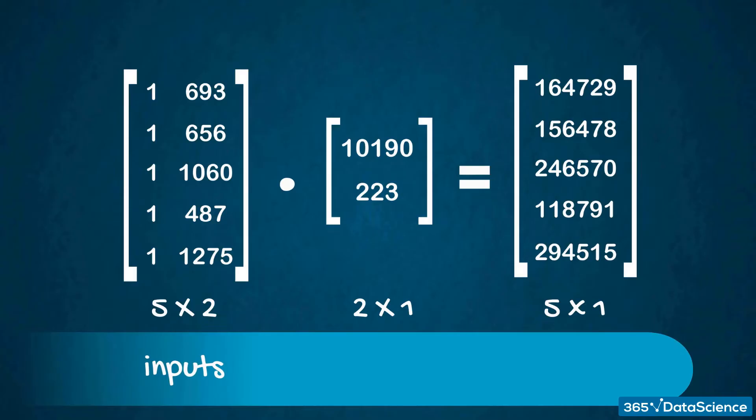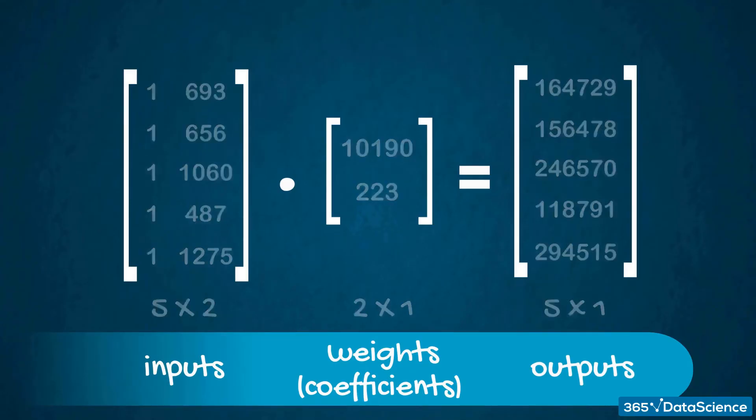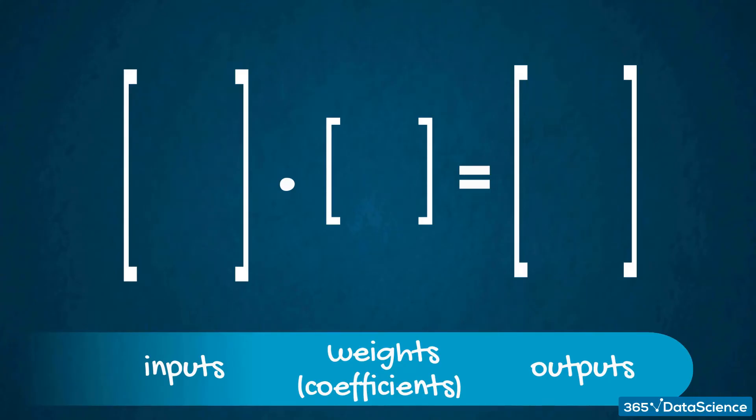We've got an inputs matrix, a weights or coefficients matrix, and an output matrix. Without diving too deep into the mechanics of it here, let's note something. If we have 10,000 inputs, the initial matrix would be 10,000 by 2, right? The weights matrix would still be 2 by 1. When we multiply them, the resulting output matrix would be 10,000 by 1. This shows us that no matter the number of inputs, we will get just as many outputs.